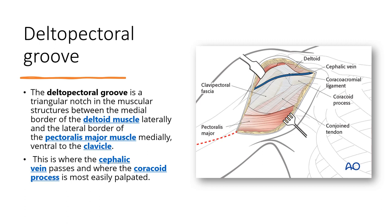So what is the deltopectoral group? The deltopectoral group is basically where the deltoid and pectoralis major muscle meet. As you can see in this diagram, this is the deltoid muscle, and this is the cut section of the pectoralis major muscle. It is the junction where the deltoid and the pectoralis major muscle meet.